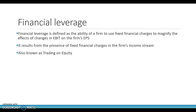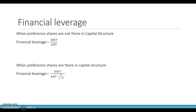When the earnings before interest and taxes (EBIT) changes, the debt interest as well as the preference dividend do not change — they remain the same. So what happens is, the earnings per share (EPS) changes to a greater extent for a given change in EBIT. Financial leverage results because of the presence of fixed financial charges, that is the debt interest as well as the preference dividend.